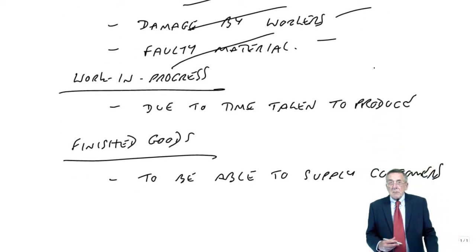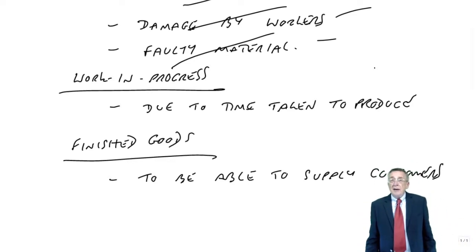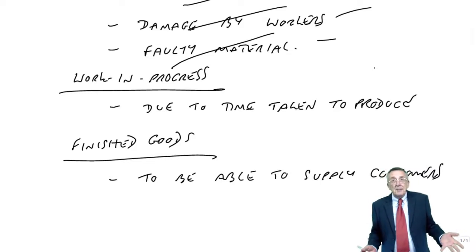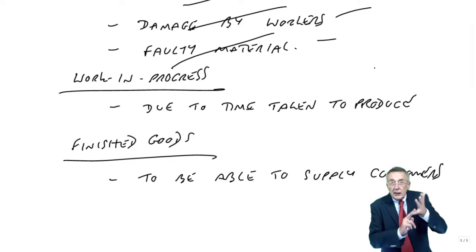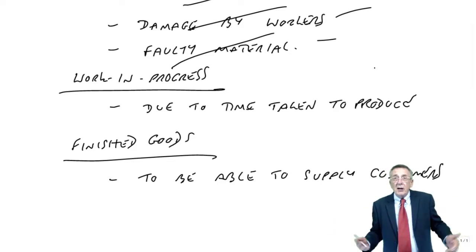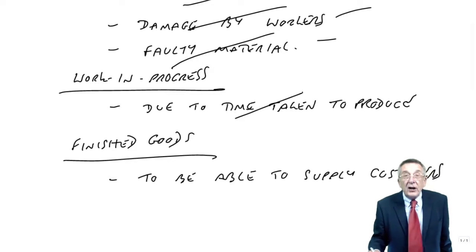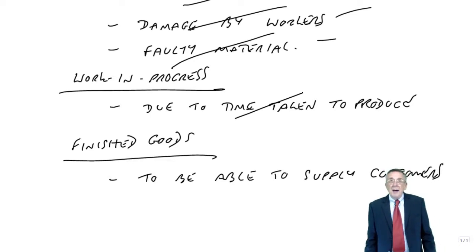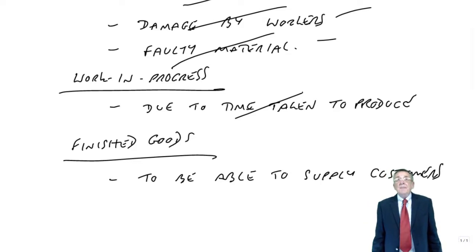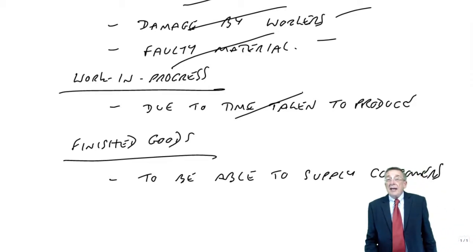What about work in progress? I said it's inevitable — it takes a month to produce. But why is it taking a month? The faster we can produce, the better — it saves money and there's less work in progress. You can't reduce that to zero, especially for something like cars, but the faster we produce, we're saving money and carrying less inventory.